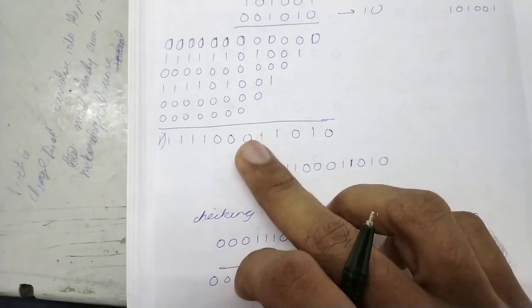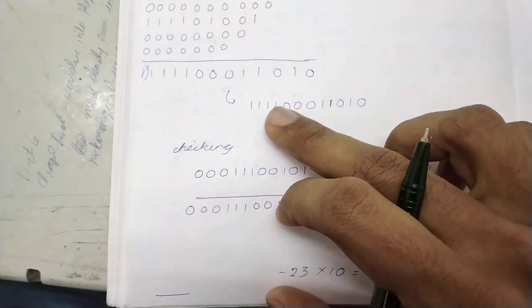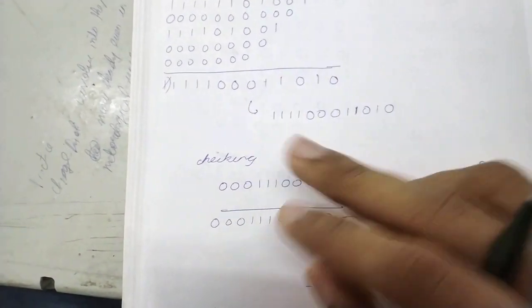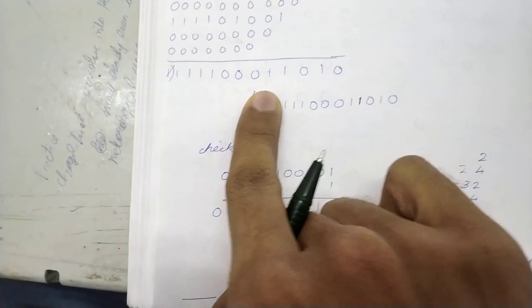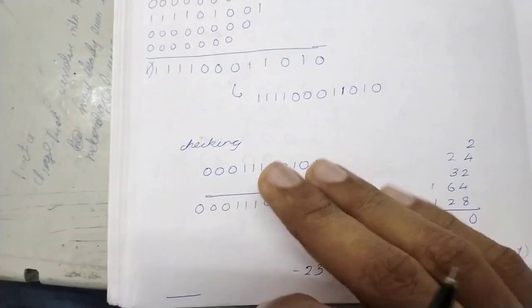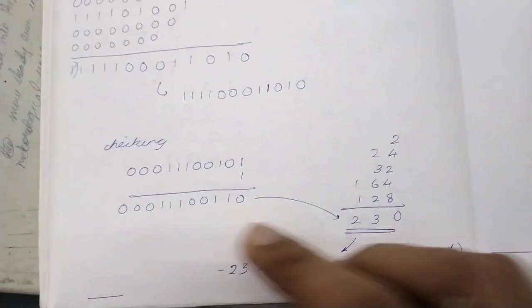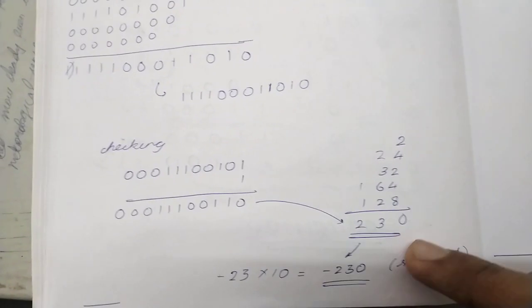And we will get this as the answer. Then as this is 2's complement, we need to check, right? So we take this number, toggle the bits, neglecting the sign bit. We have toggled: 0, 0, 0, 1, 1, 1. That toggling is done. Then we add 1. This is the number we get. We will convert this to binary. 230 we will get.